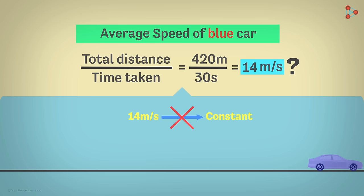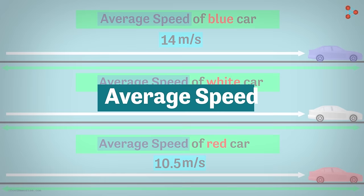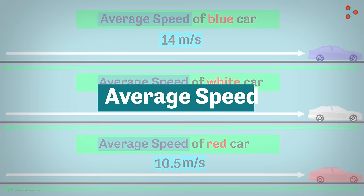The speed we calculated here is the average speed. In fact, in all three examples, it was average speed. How do we define it? Average speed is defined as the total distance traveled by an object divided by the total time taken. We will continue to discuss more about average speed in our next video.